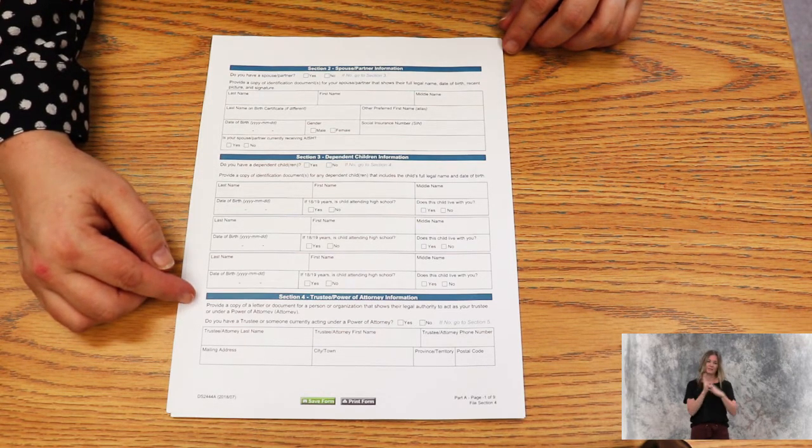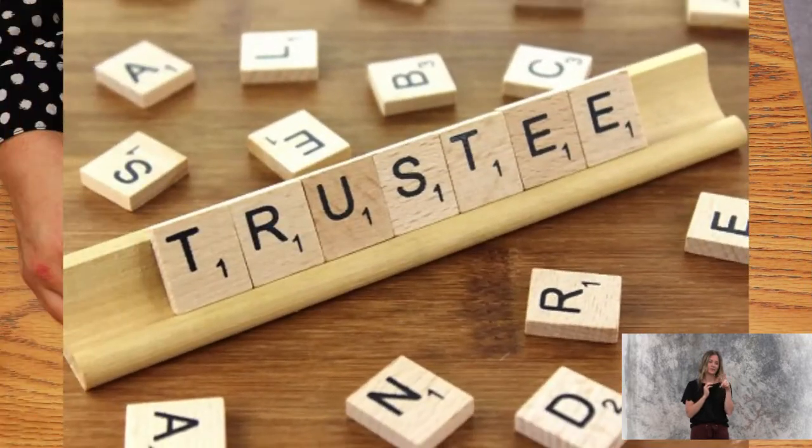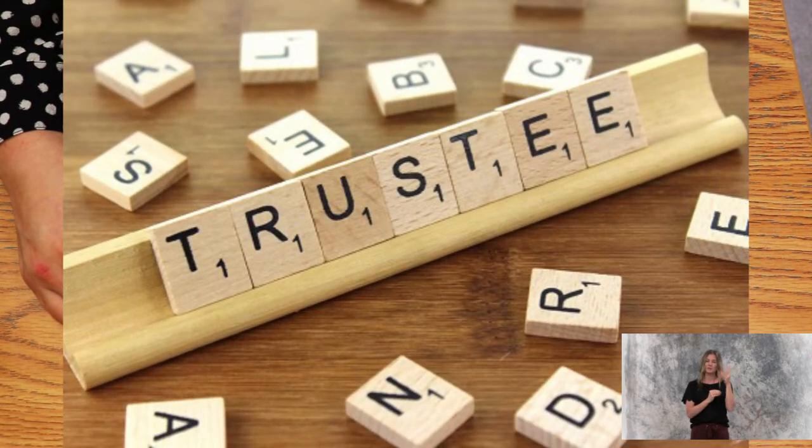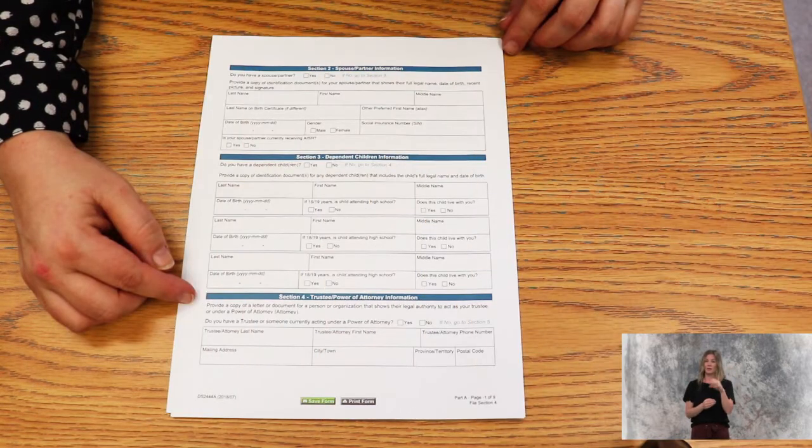Section four is trustee and power of attorney information. You will need to provide the power of attorney documentation.